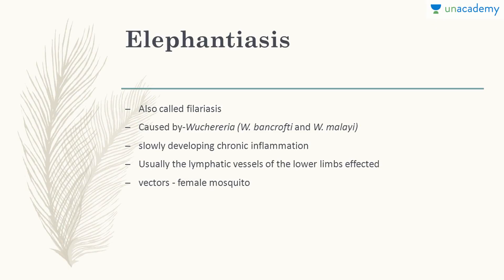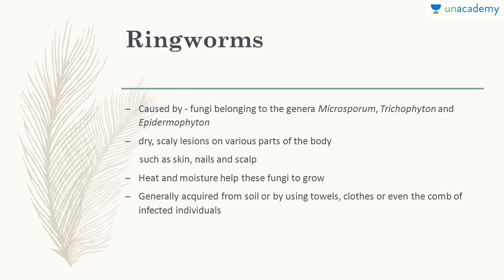Next is Elephantiasis, also called Filariasis. It is caused by Wuchereria bancrofti or Wuchereria malayi. It slowly develops as a chronic inflammation and usually affects the lymphatic vessels of the lower limbs, blocking them. The vector here is a female mosquito — identifying which mosquito is an assignment for you.